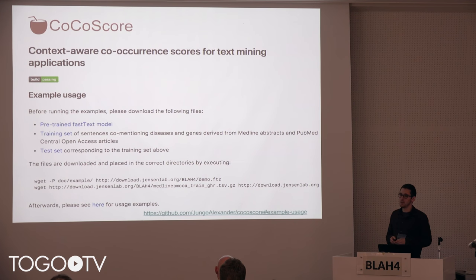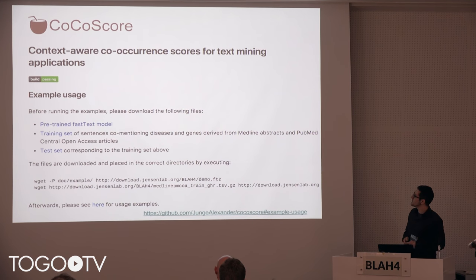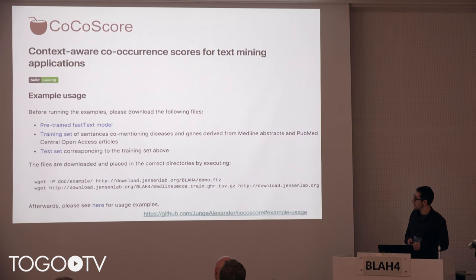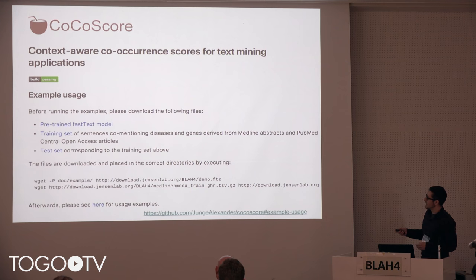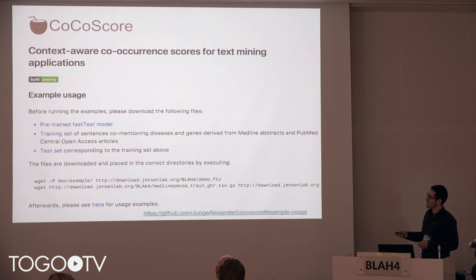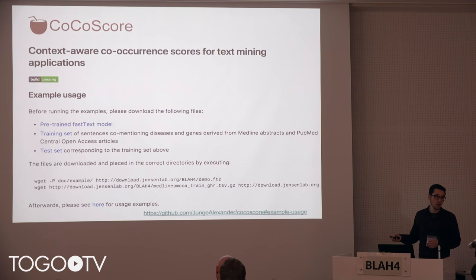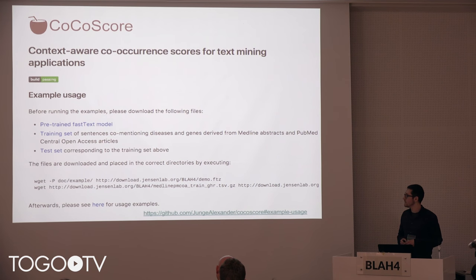What we prepared for this event is the COCO score implementation of the context-aware co-occurrence scoring scheme, which is available on GitHub as a Python library under the MIT license. On the GitHub page there is an example that walks through how the model can be used. We also have the supervised FastText model trained on disease-gene associations from Medline abstracts and PubMed Central open-access articles. The training and test set data are also linked there for download.